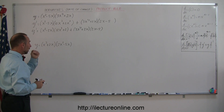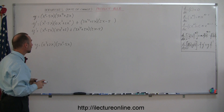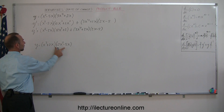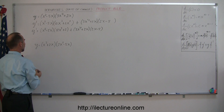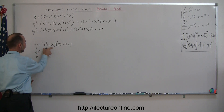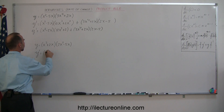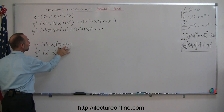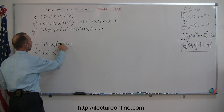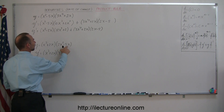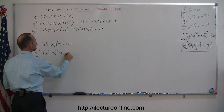Here's our second example. Again, it's the product of two functions — f of x and g of x. So when we take the derivative y prime, that's equal to the first function, which is x cubed plus 2x, times the derivative of the second function. That would be 2 times 2, which is 4x to the 2 minus 1, minus the derivative of 5x, which is simply 5.